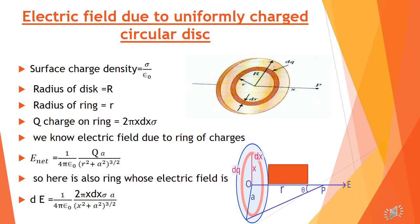For the electric field, we will consider a thin ring element of radius x, width dx. If we want to find how much charge is on this ring, then charge Q on the ring equals the area of the ring multiplied by the surface charge density. The area of the ring is 2πx dx, so charge on the ring equals 2πx·σ·dx.